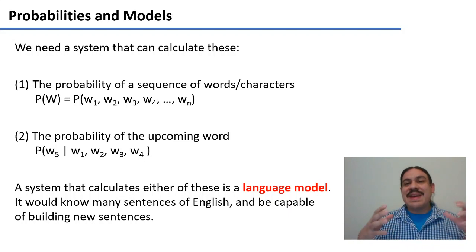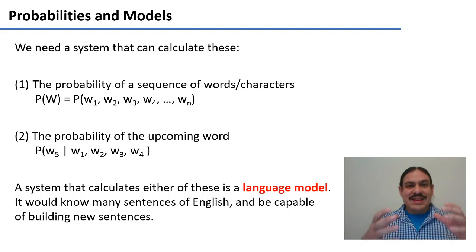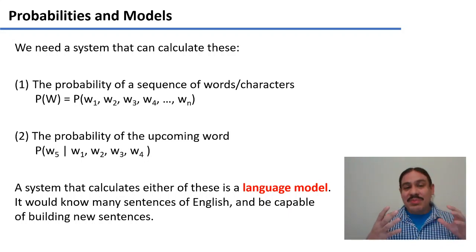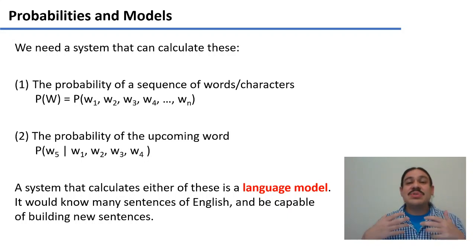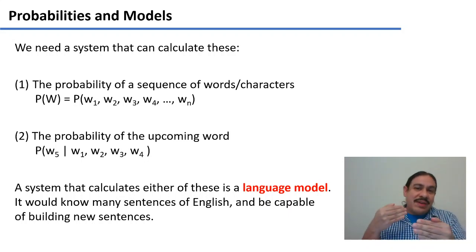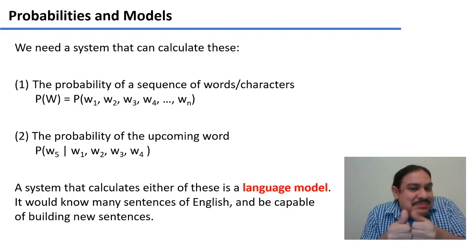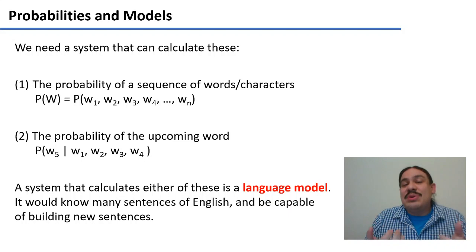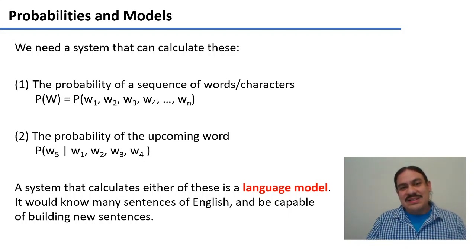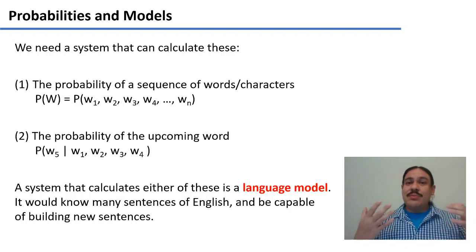A system that can capture human intuitions about language is a language model. This language model — an n-gram model — can calculate the probability of sequences of words or sequences of characters. In particular, the probability of some upcoming word given the words that have happened before. 'It's like we finish each other's...' — and then what's going to happen? Is it 'sentences'? Is it 'desks'? The computer is going to be able to tell us, and in doing so, it will replicate a capability that humans have with language.